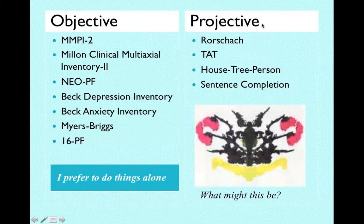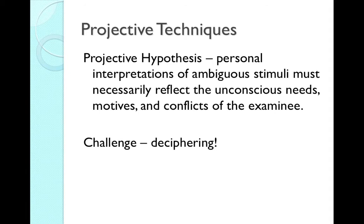Projective tests are ones that we have to read meaning into. The Rorschach — you see a picture here of a Rorschach-type inkblot. The TAT is the Thematic Apperception Test, which is a storytelling test that we'll study. The House-Tree-Person is a drawing test, and then there is a sentence completion test. Projective techniques assume a certain hypothesis, which is that personal interpretations of ambiguous stimuli must reflect the unconscious needs, motives, and conflicts of the examinee. So it's based on our unconscious needs, desires, and conflicts — that's rooted very much in psychodynamic theory.